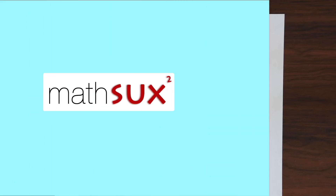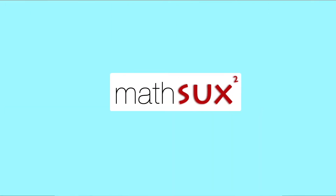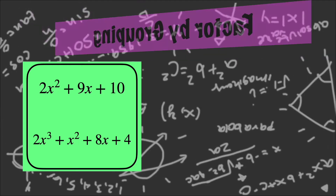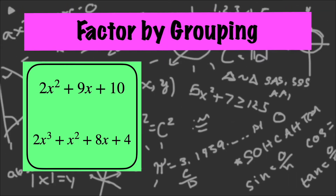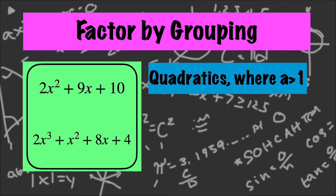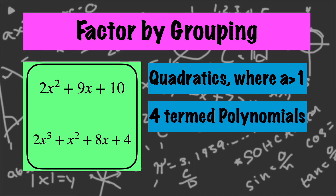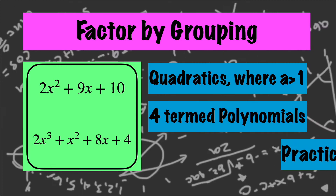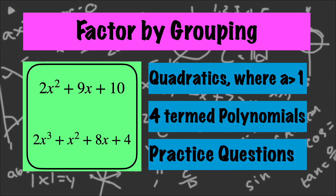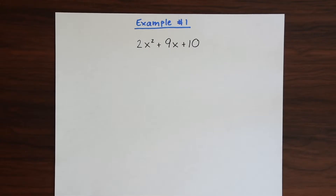Hi everyone and welcome to Math Sucks. This video is going to help you pass algebra. In this video we're going to go over factor by grouping problems. This is used to factor quadratics where a is greater than 1 and for polynomials with 4 terms. We're going to go over an example of each and then there'll be practice questions at the end that you can try on your own.